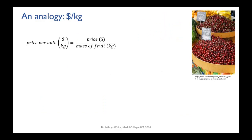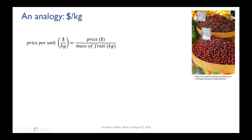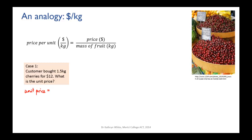The concept of enthalpy can be illustrated with an analogy. Say you're a stallholder at a market selling cherries. The amount someone pays depends on how much they want, so you set a unit price of so many dollars per kilo. There's a relationship: the price per unit (in dollars per kilo) equals the price paid divided by the mass of fruit. For example, if a friend bought 1.5 kilos of cherries for $12, the unit price is $12 divided by 1.5 = $8 per kilo.